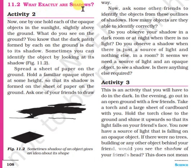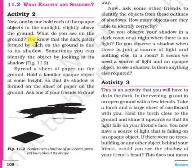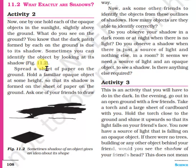What exactly are shadows? Now, one by one, hold each of the opaque objects in the sunlight slightly above the ground. What do you see on the ground? You know that the dark patch formed by each object on the ground is due to its shadow. Sometimes you can identify the object by looking at its shadow.